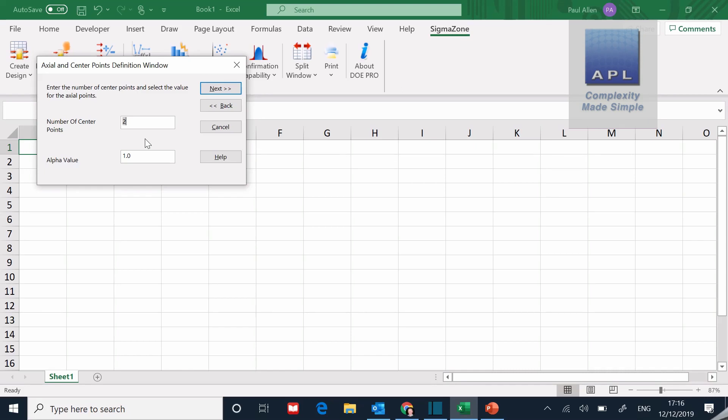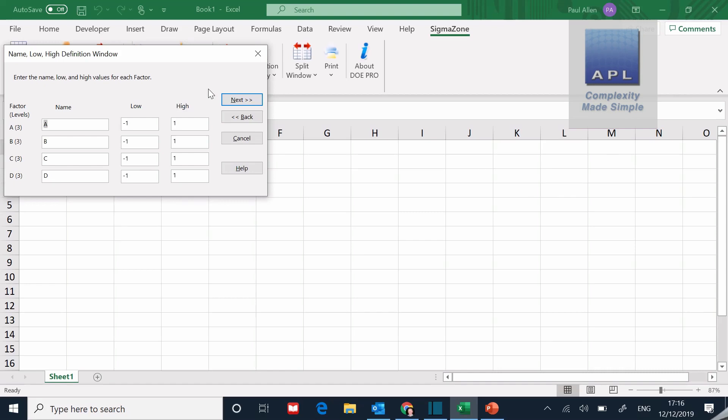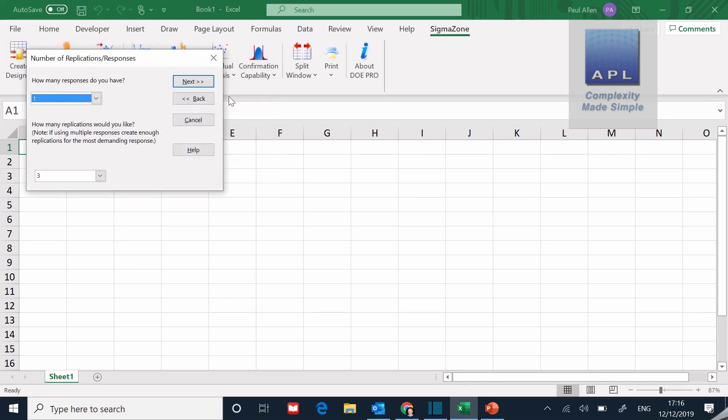How many center points do you want and what is the alpha value? And if you leave the alpha value at one, you will get a central composite face design like this diagram here.